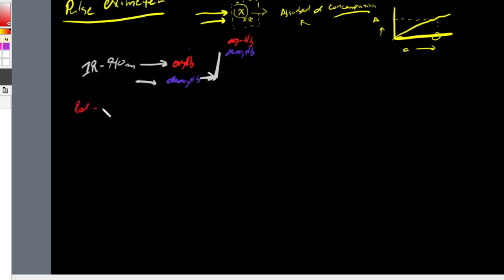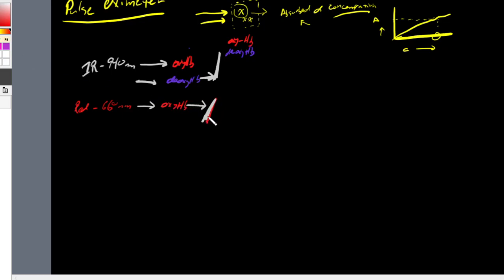Red light at a wavelength of 660 nanometers does not absorb oxyhemoglobin — you'll see red light being transmitted through oxyhemoglobin. But with deoxyhemoglobin, if you shoot red light through it, you will not see that light transmitted to the other end. So deoxyhemoglobin absorbs red light.